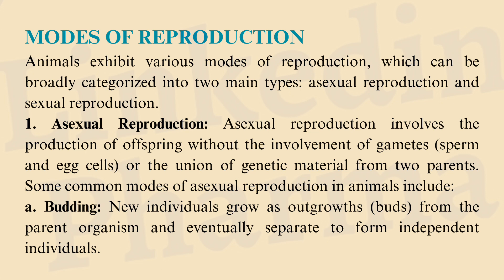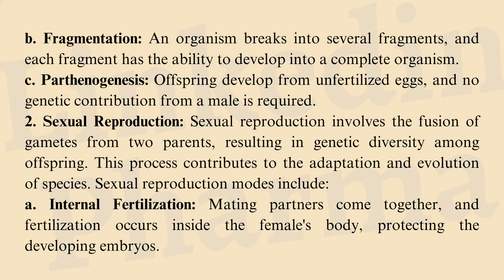Asexual Reproduction involves the production of offspring without the involvement of gametes (sperm and egg cells) or the union of genetic material from two parents. Common modes include: a) Budding — new individuals grow as outgrowths (buds) from the parent organism and eventually separate to form independent individuals. b) Fragmentation — an organism breaks into several fragments, and each fragment has the ability to develop into a complete organism. c) Parthenogenesis — offspring develop from unfertilized eggs, and no genetic contribution from a male is required.